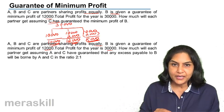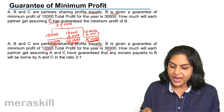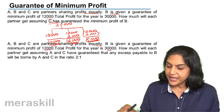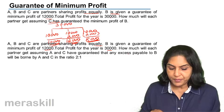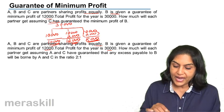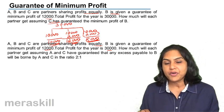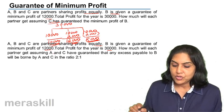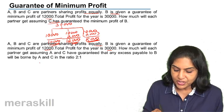How much will each partner get assuming A and C have guaranteed that any excess which is payable to B will be borne by A and C in the ratio of 2 is to 1. So again, what should be the shares of profit?